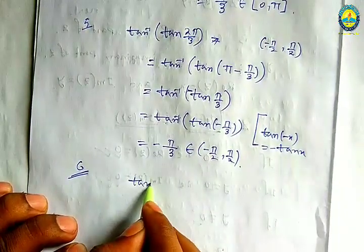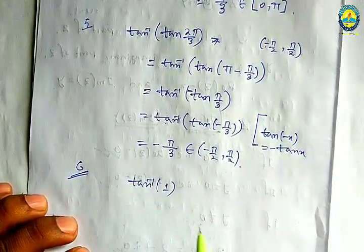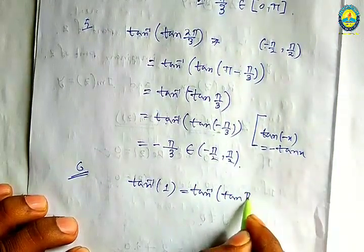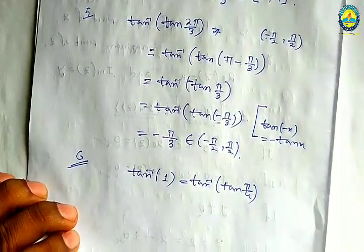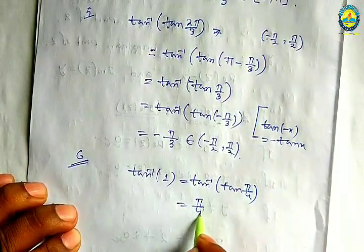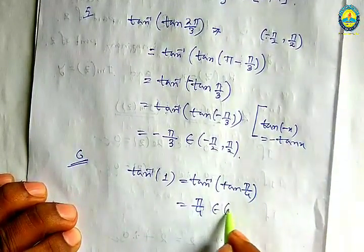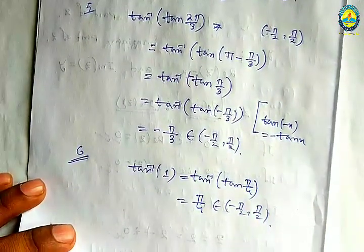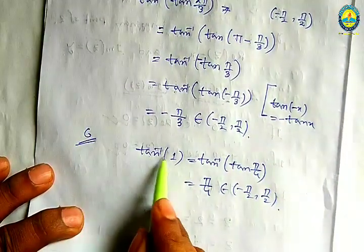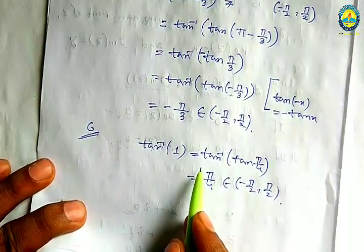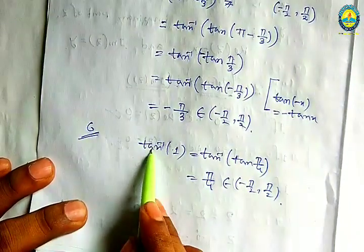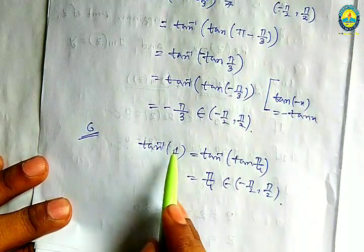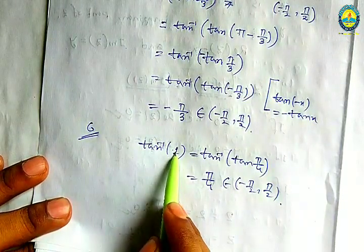So the value range is minus pi/2 to plus pi/2. Then you can see that tan inverse 1 is equal to pi by 4. You will see the value of tan inverse 1. The value of tan is 45 degrees.